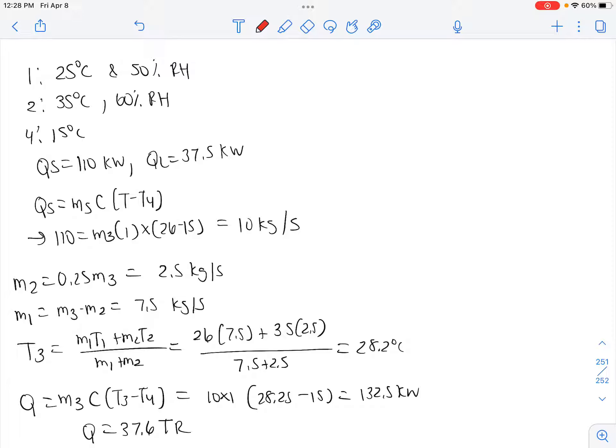Our QS is 110 kilowatts and our QL is 37.5 kilowatts. So we can set QS equal to M3 times C for air times T minus T4. So we have M3 times 1 times 26 minus 15, giving us M3 equals 10 kilograms per second.